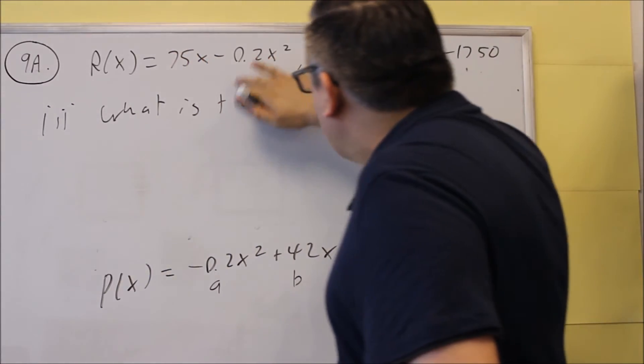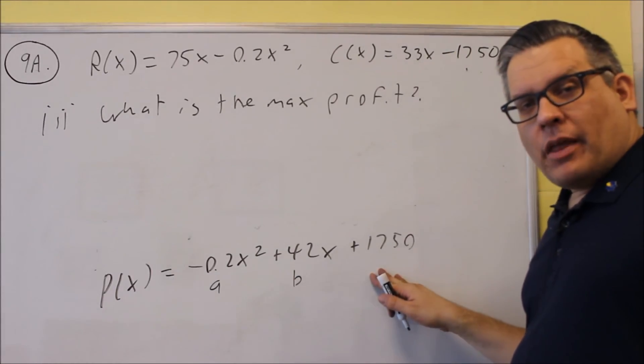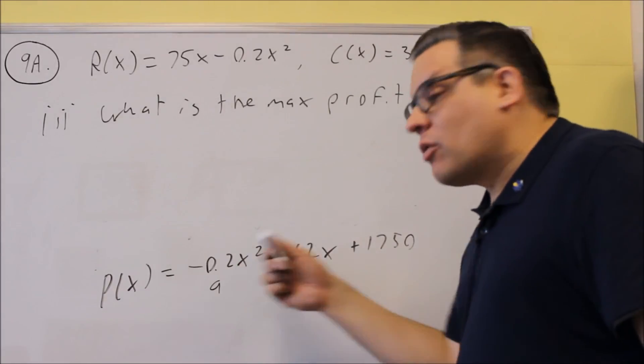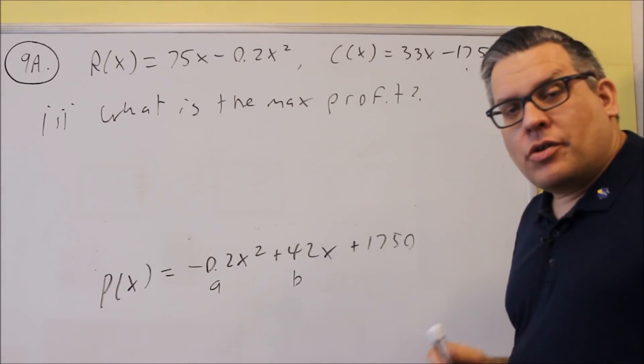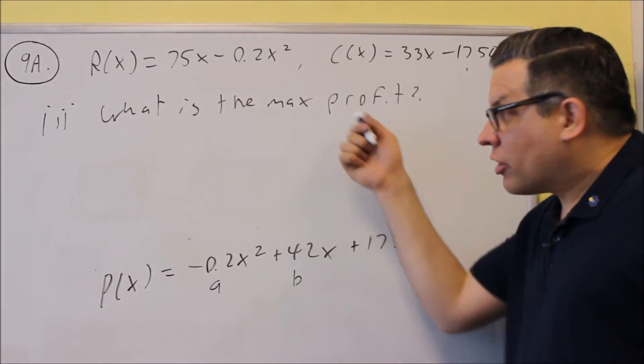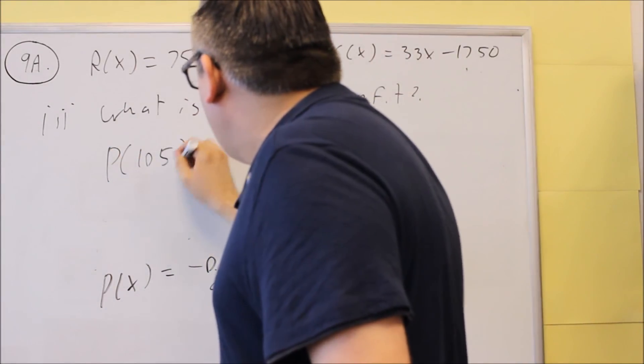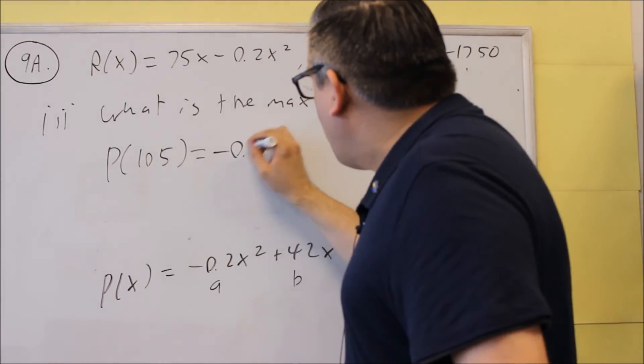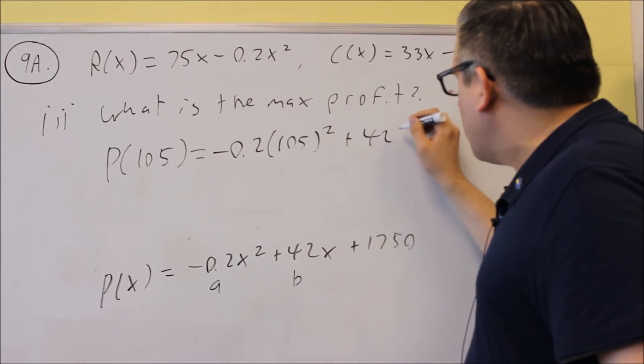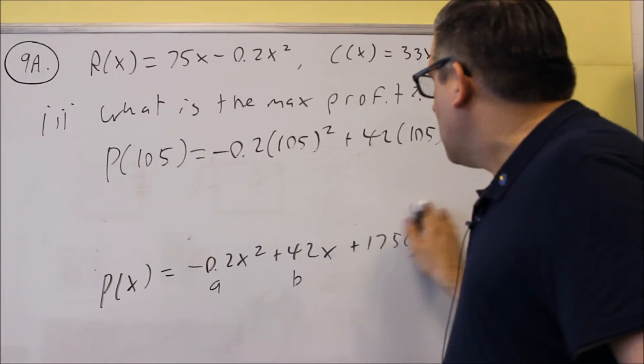We're still going to use this formula, and we're going to use what we found in part two. In part two, we found that x equals 105 watches. So now we're going to take 105 and put it into the profit formula. I want to find P(105): negative 0.2 times 105 squared plus 42 times 105 plus 1750. That's going to give me the answer for the maximum profit.